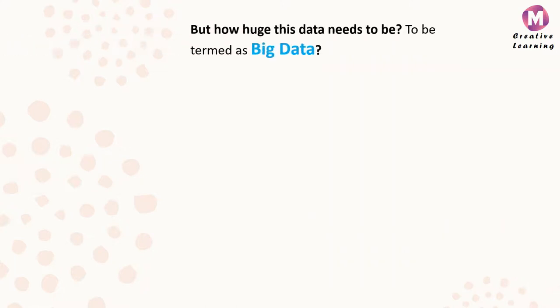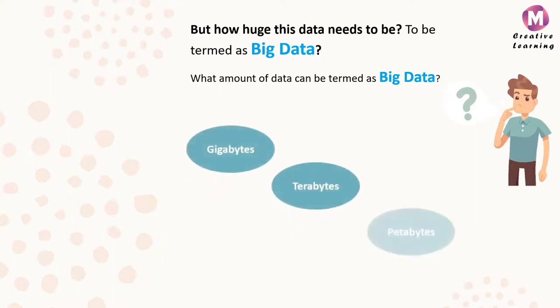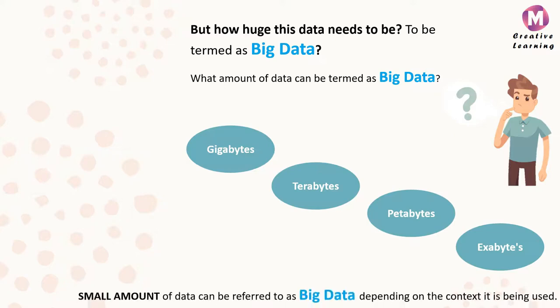But how huge does this data need to be to be termed as big data? There is a lot of misconceptions surrounding what amount of data can be termed as big data. Usually the data which is either in gigabytes, terabytes, petabytes, exabytes or anything larger than this in size is considered as big data. This is where the misconception arises. Even a small amount of data can be referred to as big data depending on the context it is being used.